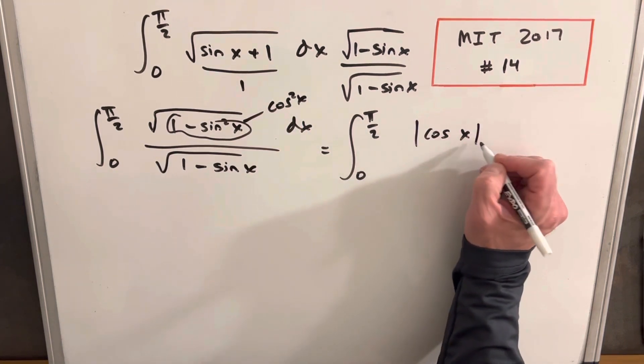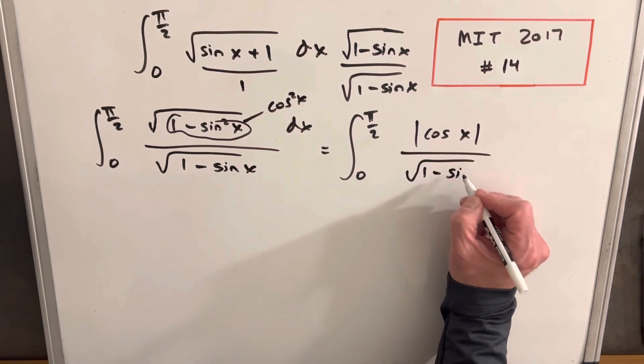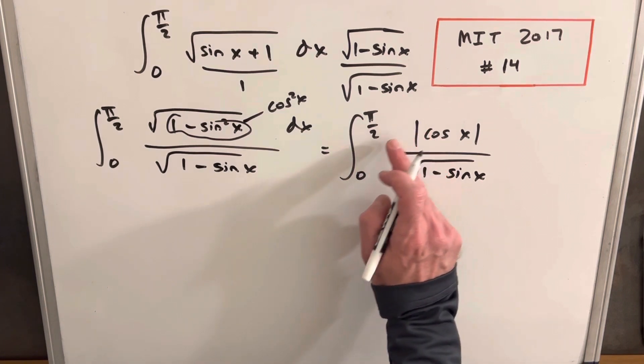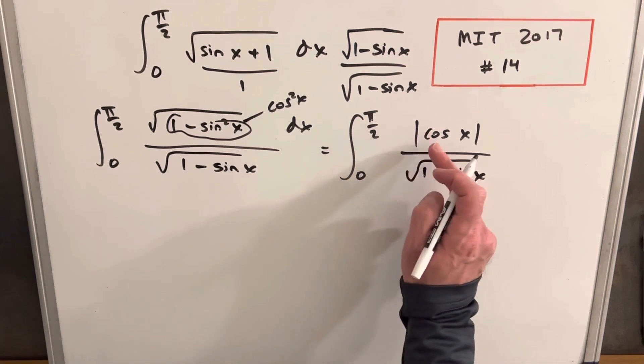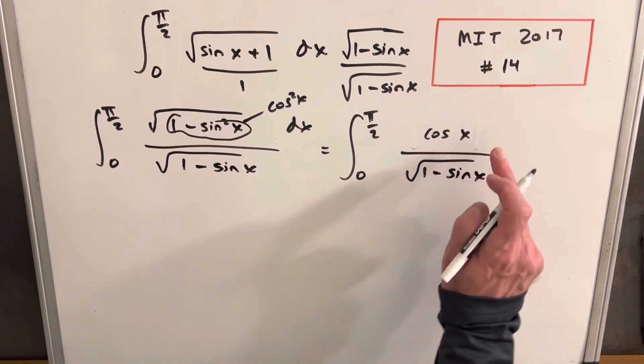So next we'll take the square root of cosine squared x, and that's just cosine of x. Now we do at first need to have that in absolute values, but we can remove that. And I'll show you why. The reason we can remove the absolute values is because from 0 to pi over 2, cosine of x is always positive. So we'll just remove that right there.